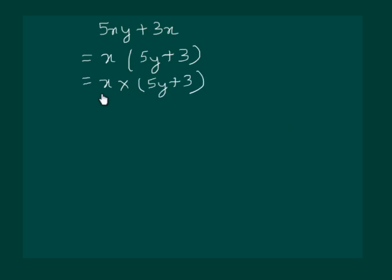We can see that both the terms are not further reducible or they are irreducible. So we can say that x is one factor of this algebraic expression and 5y plus 3 is another factor of this algebraic expression.